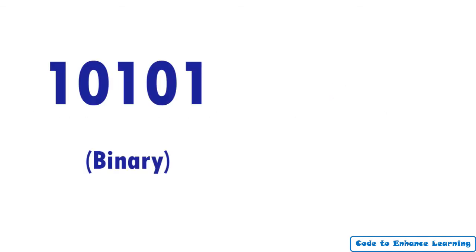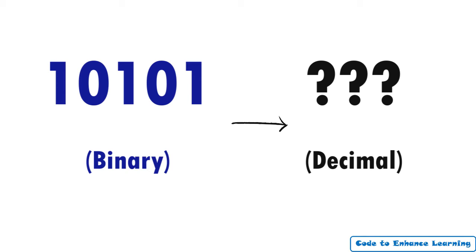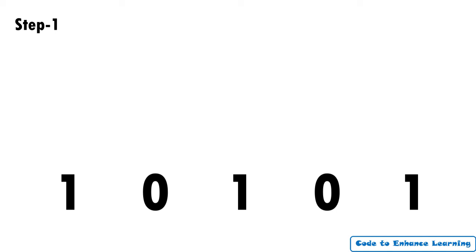Let's say we want to find the decimal conversion of the binary number 10101. The first step is to write down the binary number shown on the screen.